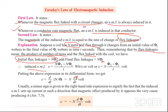Usually a minus sign is given to the right side expression to signify the fact that the induced EMF sets up current in such a direction that the magnetic effect produced by it opposes the very cause producing it. This is Lenz's Law. So emf equals -N(dφ/dt). This is the Second Law of Electromagnetic Induction.